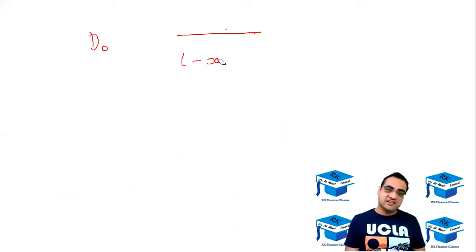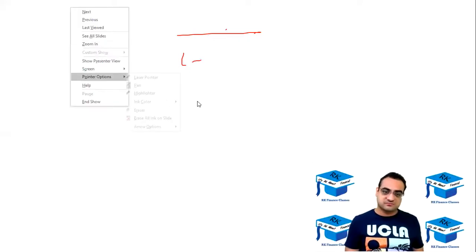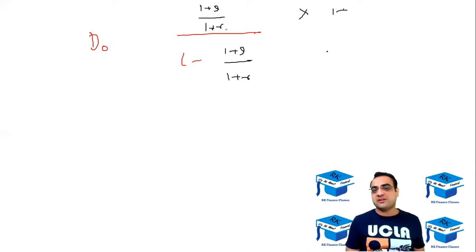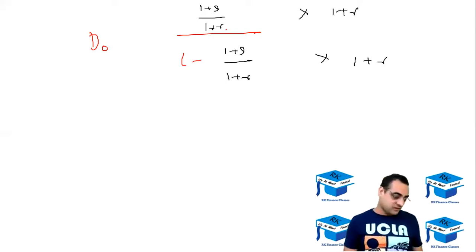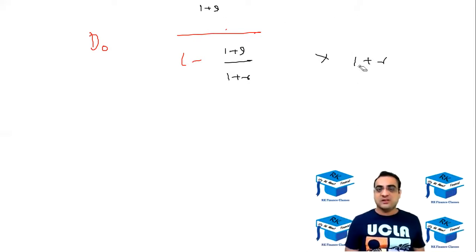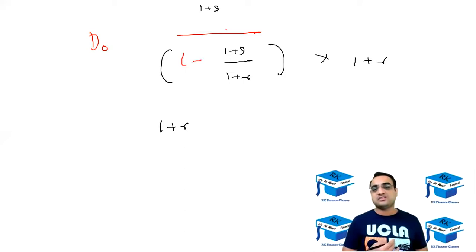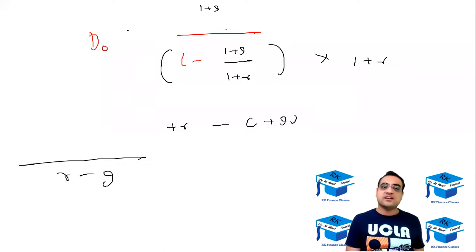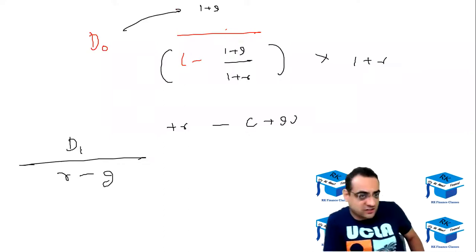We replace x by one plus g upon one plus r. Then we multiply the numerator by one plus r and the denominator by one plus r. The one plus r in numerator and this one plus r cancel, leaving one plus g in the numerator. In the denominator, one plus r into one is one plus r, and one plus g divided by one plus r into one plus r is one plus g; the one and minus one cancel, leaving r minus g. So numerator is D0 into one plus g which equals D1, denominator is r minus g. That's how you get the Gordon Growth Model.